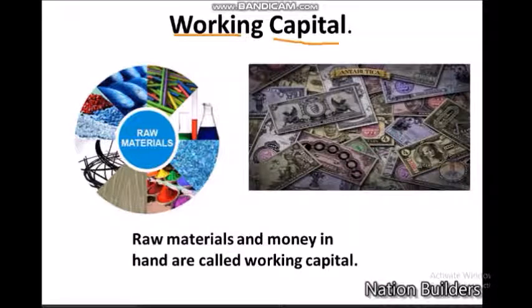Another type of capital is working capital. Working capital involves raw materials and money in hand. Production requires a variety of raw materials, such as yarn used by the weaver and clay used by the potter. Also, some money is always required during production to make payments and buy other necessary items. Raw materials and money in hand are called working capital.